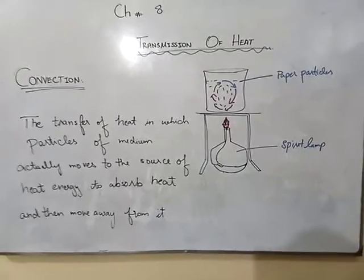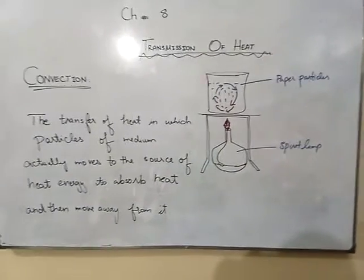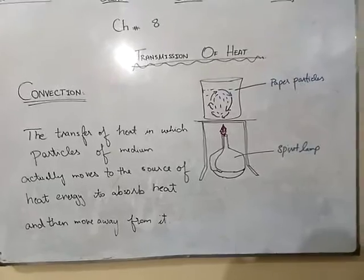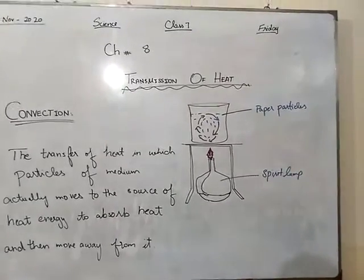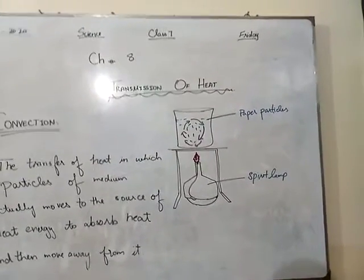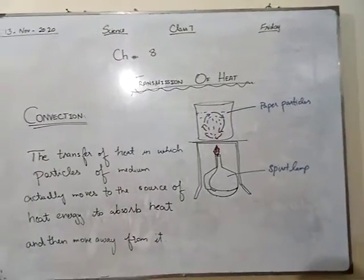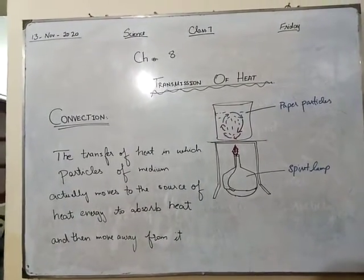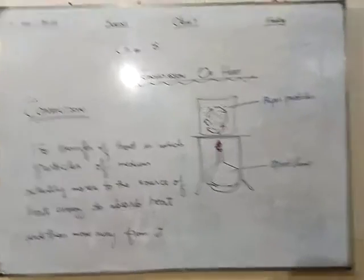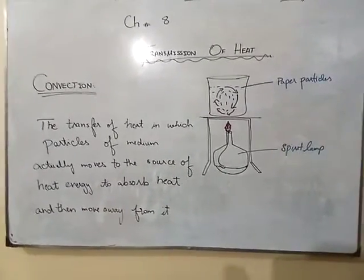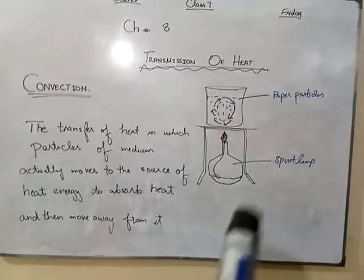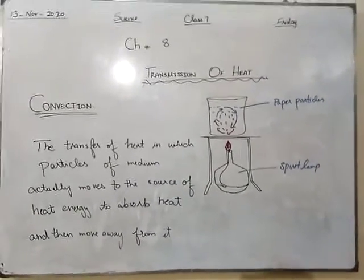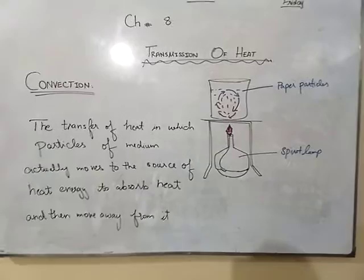Your next definition given in your book is convection current. Convection current is basically the upward and downward movement of molecules of water or gas — liquid or gas. When we see this upward and downward movement of liquid or gas, we call it convection current.